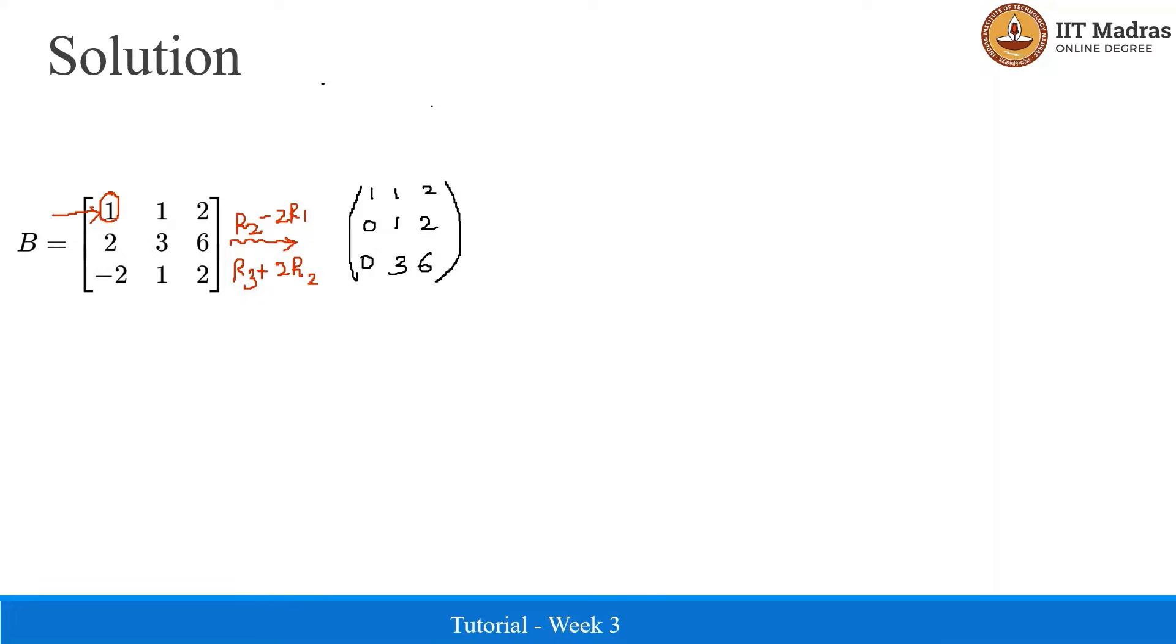Now we have obtained our second pivot element 1, so now we can go and reduce row 3. This is our row echelon form.